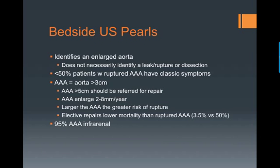Just a few quick pearls. Bedside ultrasound identifies an enlarged aorta — it does not identify a leak, a rupture, or a dissection. Less than 50% of patients with a ruptured AAA are going to have the classic symptoms of acute onset back pain, abdominal pain, and a pulsatile mass. So you need to make sure to keep your differential nice and broad.